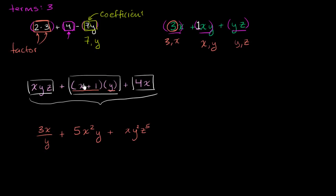That smaller expression is multiplying y, making it one of the factors. And then the third term also has two factors: a 4 and an x. If someone asked what the coefficient of that term is, you'd say the coefficient is 4. What's interesting here is that a smaller expression can itself act as one of the factors of a larger term.